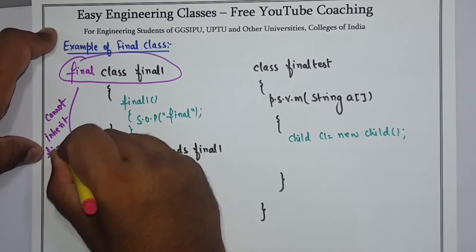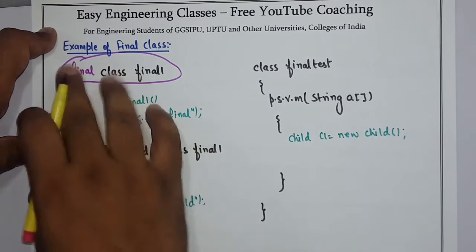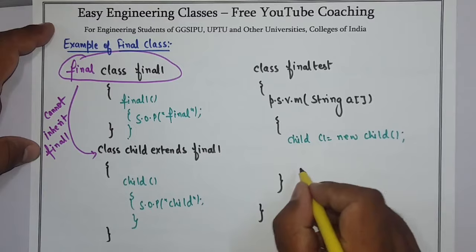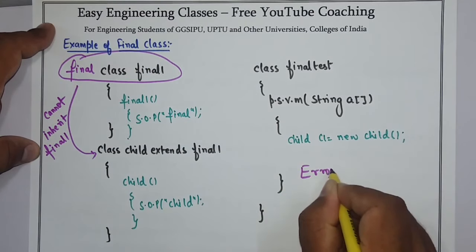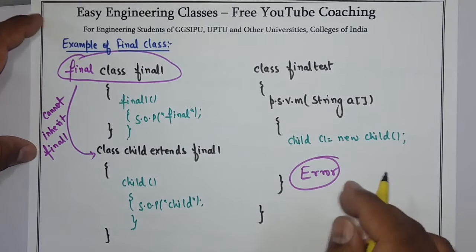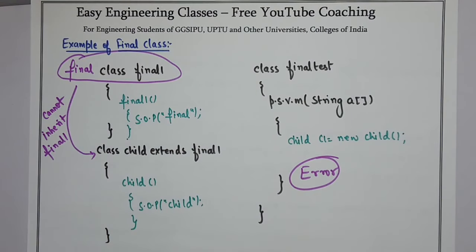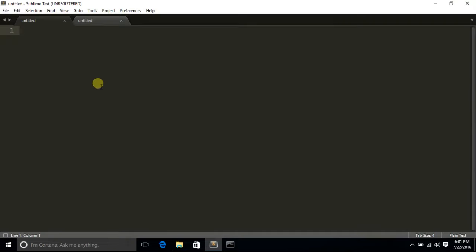This is a very basic example that will make the final class concept clear. Right now there is no error because the child class is extending a parent class. The error will come when I make the parent class final — since it becomes a final class, it cannot be inherited. Now let's see the demonstration of all three cases, beginning with the final variable implementation.